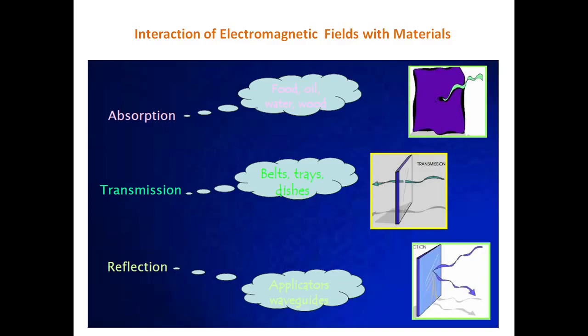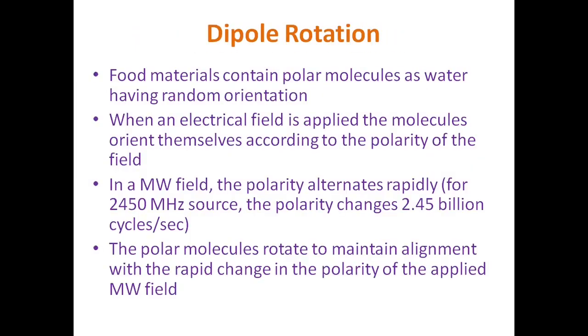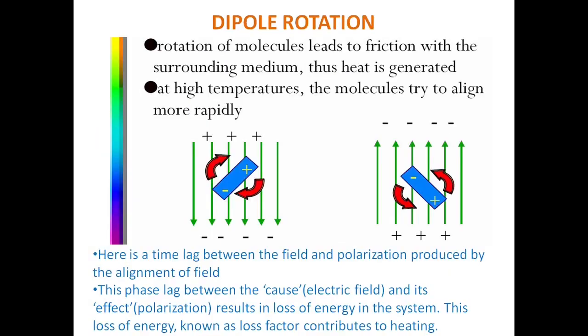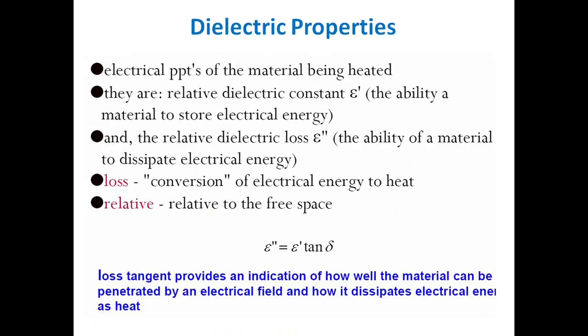Materials capable of transmitting microwaves can be used as utensils, trays, dishes, belts, and conveyors. Materials that reflect microwaves can be used as applicators and waveguides to direct microwave energy from the generator to the oven cavity. Now moving on to the dielectric properties of food that govern microwave interaction.